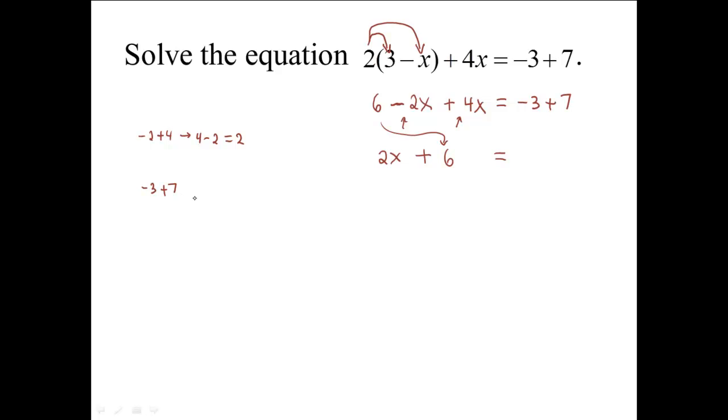Equals negative 3 plus 7. Negative 3 plus 7 is the same thing as positive 7 take away 3, which is 4.